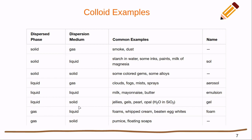A liquid dispersed in a solid includes jellies, gels, pearls, and opal. A gas dispersed in a liquid gives us foams and whipped cream. A gas dispersed in a solid is seen in things like pumice or floating soaps — typically really porous, very light solids that have a bunch of gas dispersed in them.